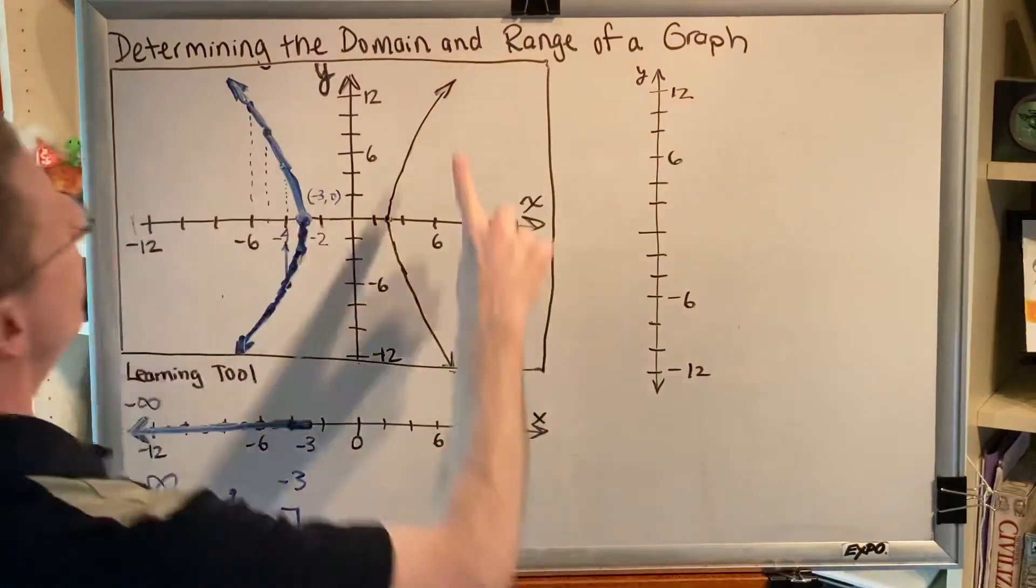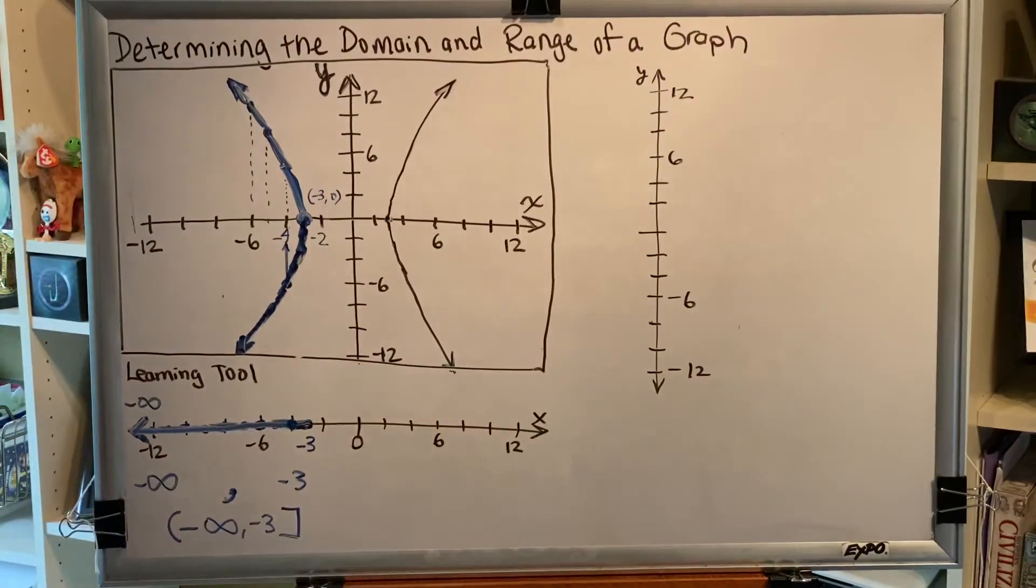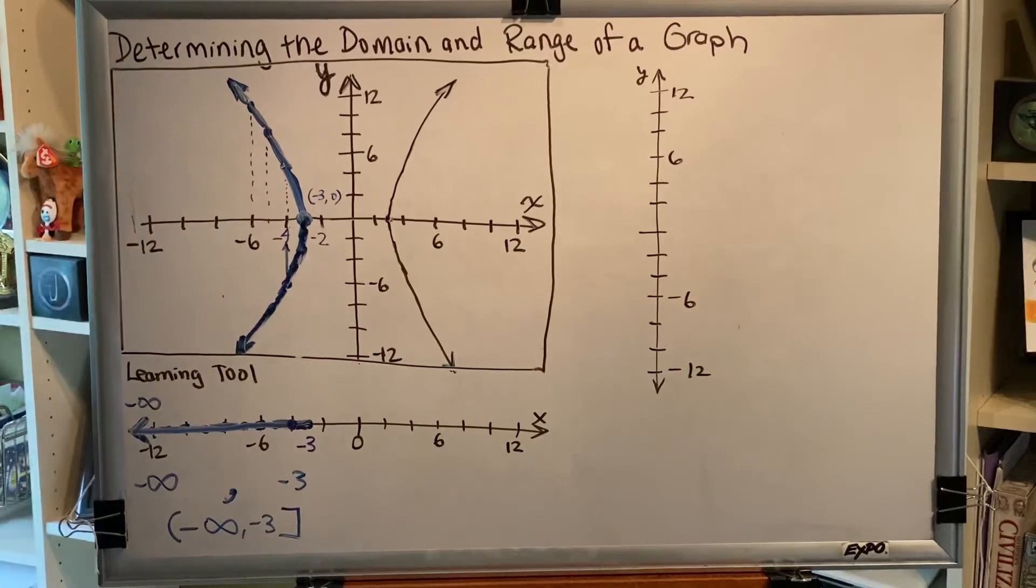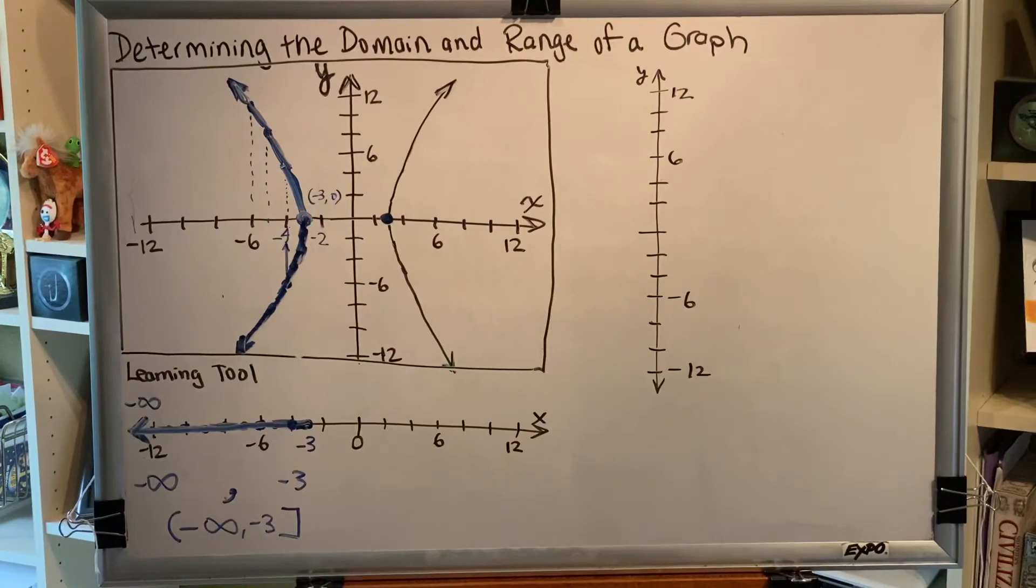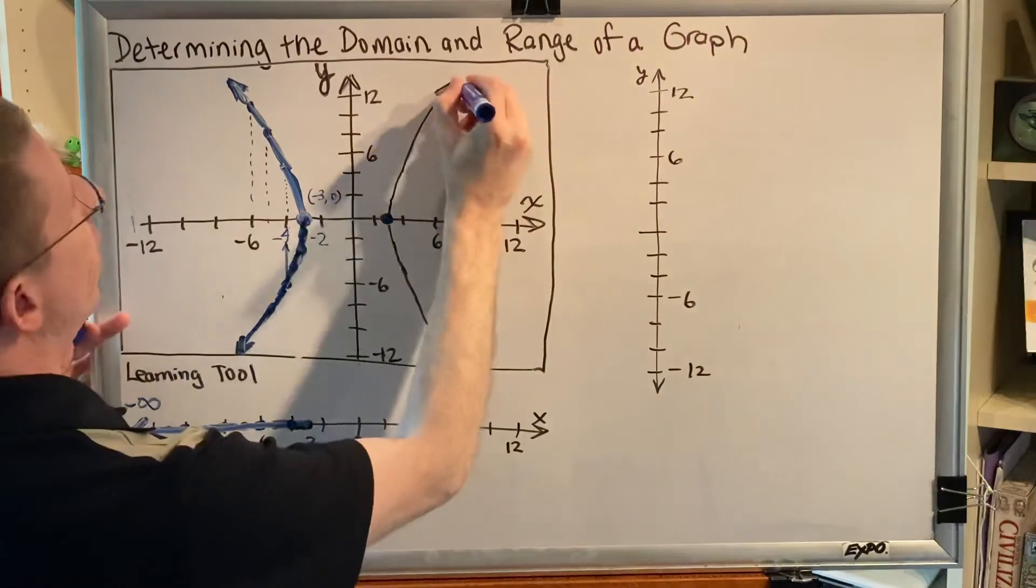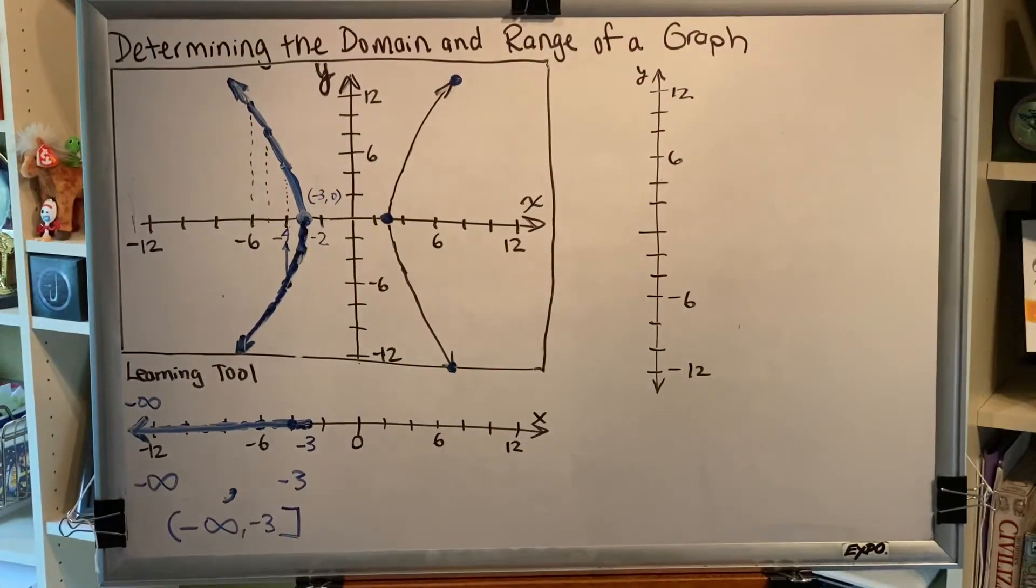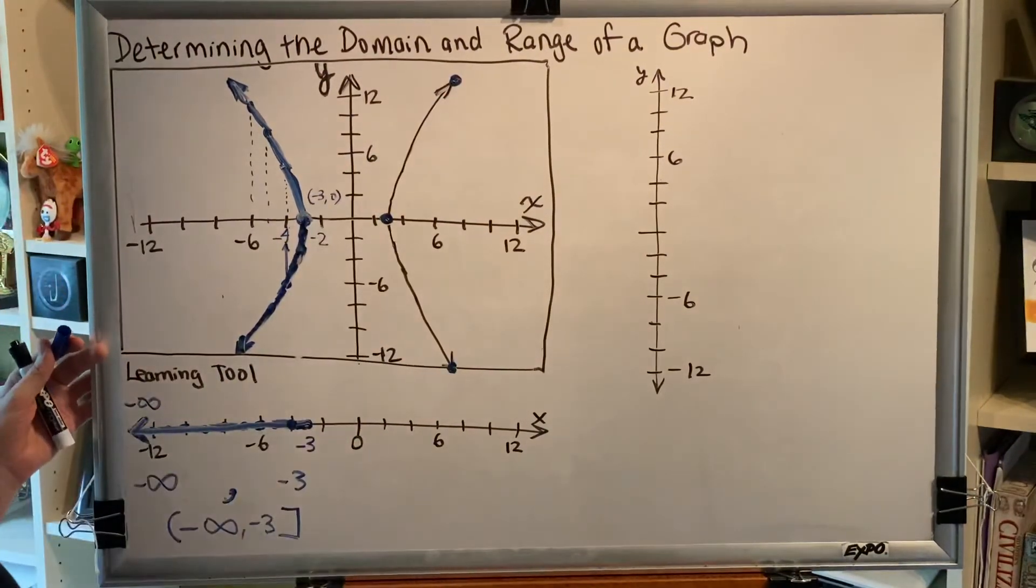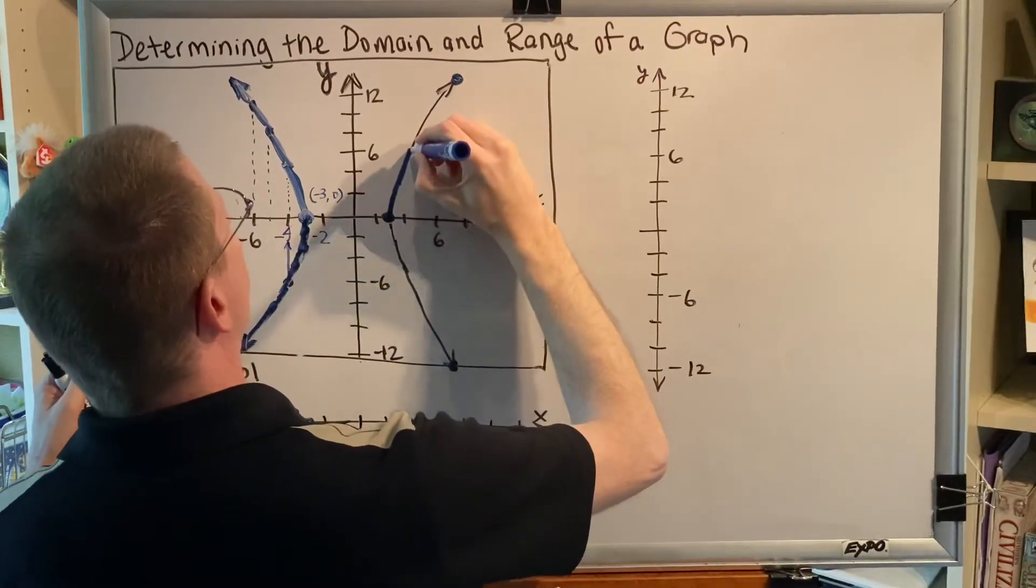So turning our attention to the right wing of this graph, which point on this graph is farthest to the left? Which point on the black curve is closest to the silver edge of my board? Well, that would be this one. And which part of it is closest to the right? Closest to the right edge of my board? That would be this one. Or this one, they're tied. They're both equally to the right. Can you trace a path from the leftmost point to the rightmost point by moving along your curve without picking up your marker? The answer is yes.